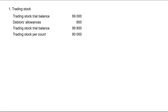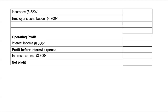A trading stock deficit is recorded under operating expenses in the income statement. Show workings in brackets: 99,800 minus 90,000 equals 9,800. If it had been a surplus — meaning the physical count exceeded the book value — it would be recorded under other operating income as a trading stock surplus.